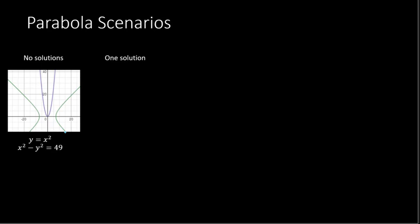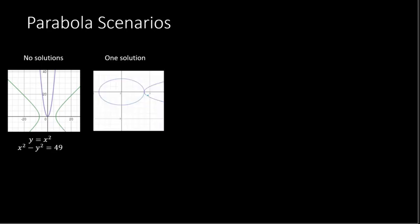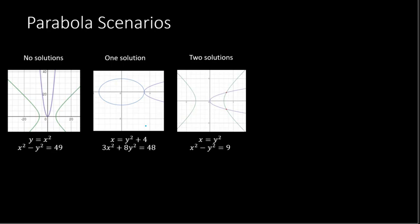It could be one solution — where you have an ellipse and a parabola touching at just one point. It could also be two solutions, where we have a hyperbola and a parabola, and the parabola hits at two different points, creating two different solutions because it crosses at two different spots.